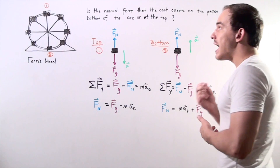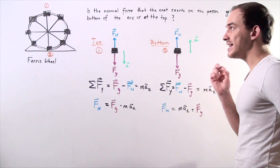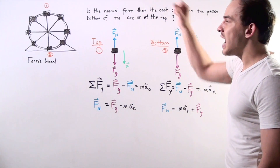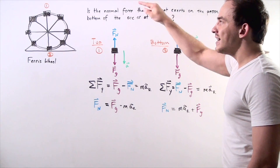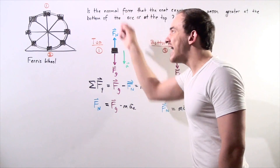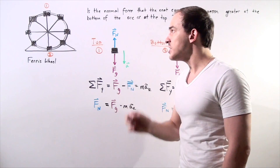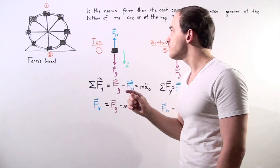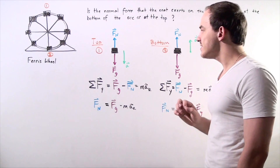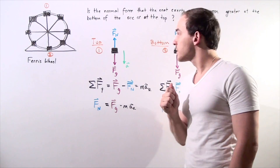What about our acceleration? In which direction is our person accelerating at the top? At the top, the person is accelerating directly downward. So our radial or centripetal acceleration of the person at the top points downward, in the same direction as the gravitational force.